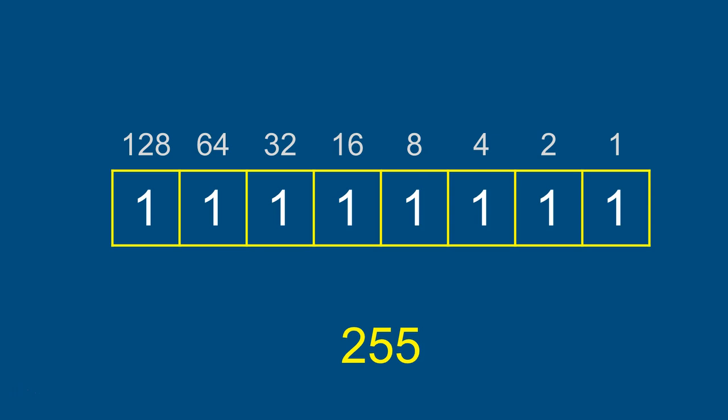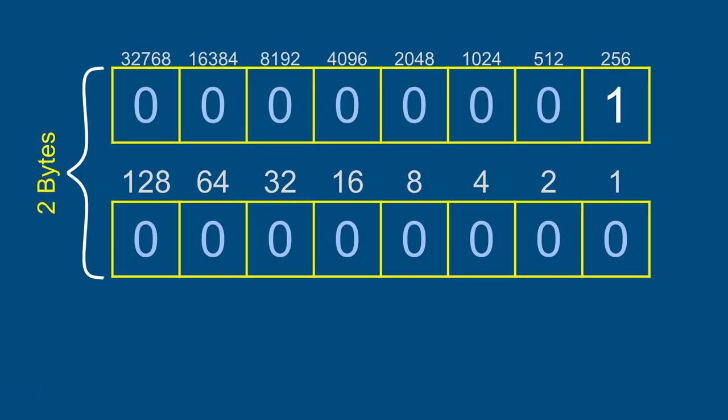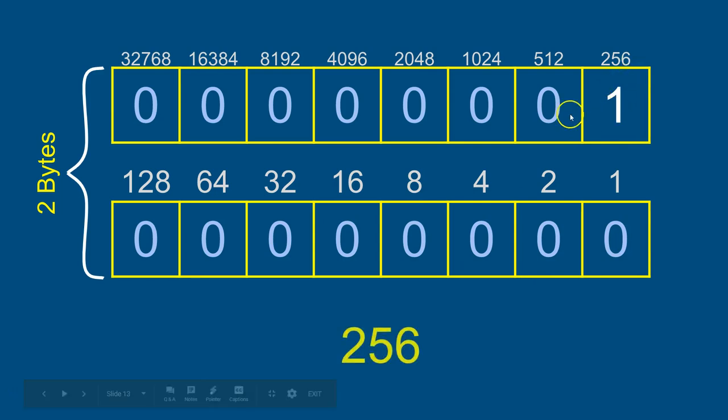255 is as big as you can go with one byte. In VBA we never allocate memory in chunks smaller than a byte. To go bigger you need another byte, which adds a 256 column. For 512 you'd use that bit, and 511 would be the 256 plus everything below it - one less than 512. And 1000 in binary has specific ones and zeros that add up to 512 + 256 + 128 + ... = 1000.